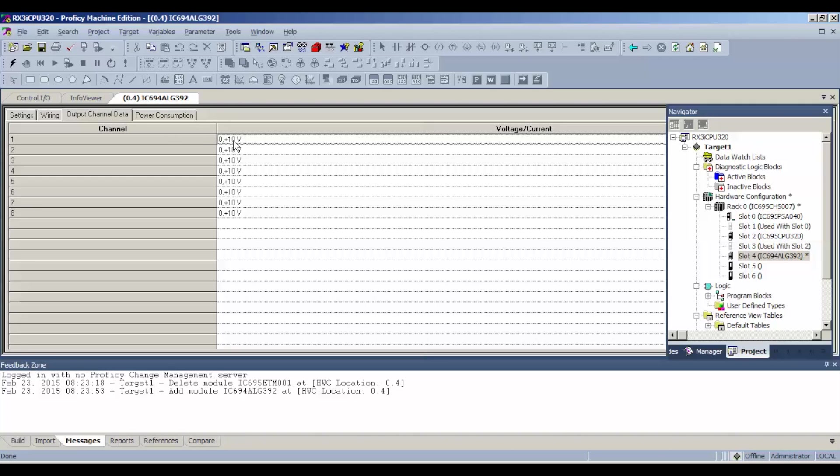The next thing is output channel data. This is another editable value. Right now, we're going to test 0 to 10 volts first, and then we're going to shut down and reset it for 4 to 20 milliamps.